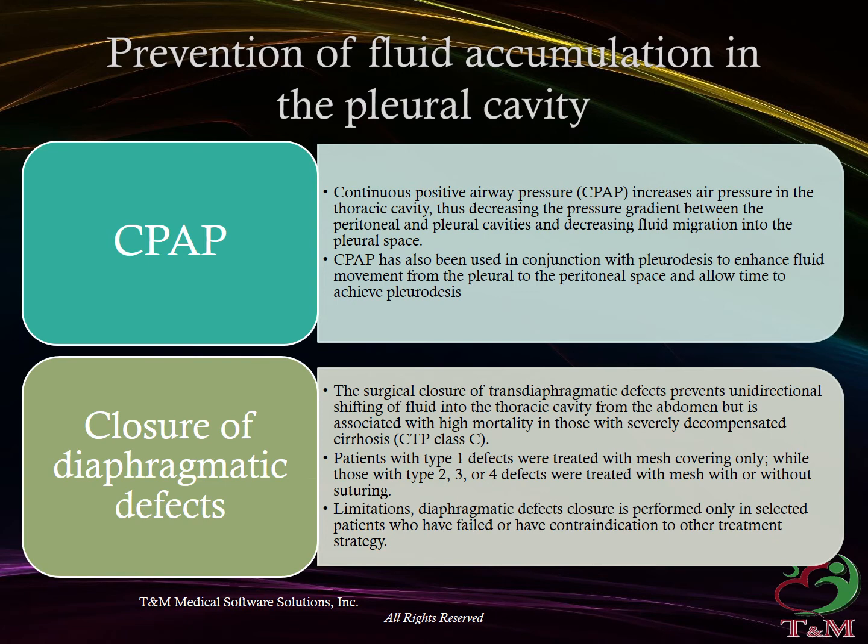Patients with type 1 defects were treated with mesh covering only, while those with type 2, 3, or 4 defects were treated with mesh with or without suturing. Limitation: diaphragmatic defect closure is performed only in selected patients who have failed or have a contraindication to other treatment strategies.